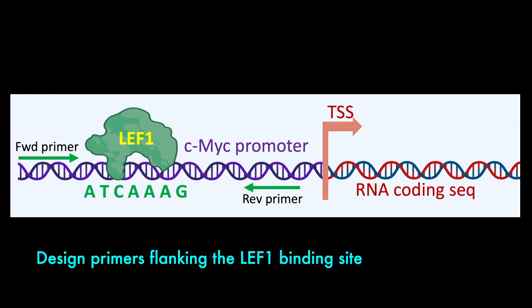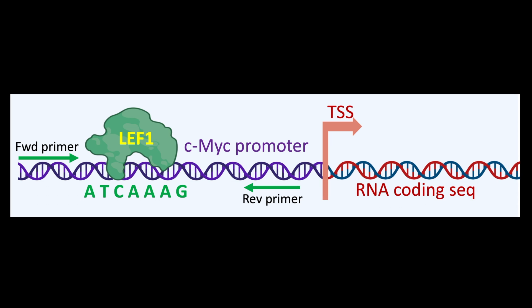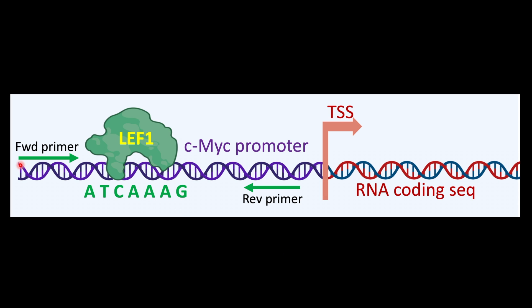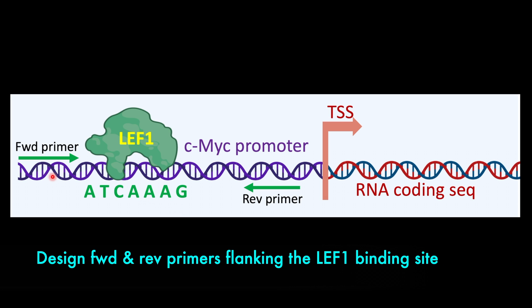In this tutorial, we will learn to design primers for chromatin immunoprecipitation that flanks a specific sequence in the promoter. The example here shows LEF1 transcription factor binds to the promoter of CMYC at a specific sequence ATCAAG. We will design the forward and reverse primer that flanks the specific sequence where LEF1 occupies at the CMYC promoter.